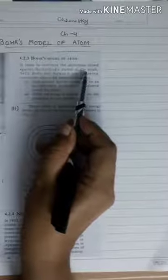In order to overcome the objections raised against Rutherford's model of atom, what were the limitations of Rutherford? It could not explain the stability of the atom. So Neil Bohr put forward the following postulates about the model of atom.